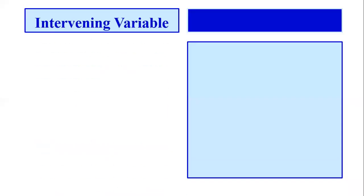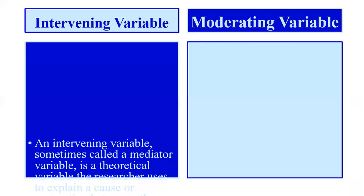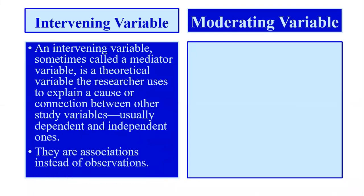The first one is intervening variable. Intervening variable is sometimes called mediator variable. It is a theoretical variable — not a practical variable — used to explain the cause or relationship between other study variables, usually the dependent and independent variable.